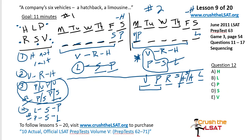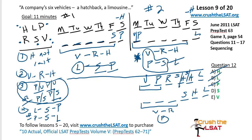Question 12: who cannot be serviced on Thursday? H can go on Thursday — cross out A. L can float around in scenario one — cross out B. P cannot go on Thursday in scenario one, but in scenario two P on Thursday works with S on Friday, and V–R–H filling Monday through Wednesday. S on Thursday in scenario two also works with H on Friday and P fitting next to V or S. V, however, must be on Monday or Tuesday — it cannot be on Thursday. Answer E.